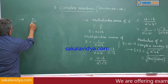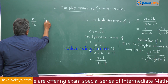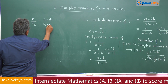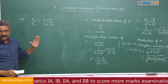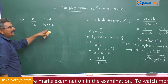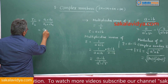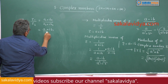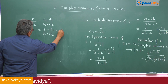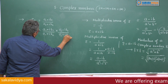Now, z1 by z2 — how to find out z1 by z2? z1 is say a1 plus ib1 and z2 is a2 plus ib2, just as we discussed. Now, multiply with the conjugate complex number of a2 plus ib2. So this is a1 plus ib1 by a2 plus ib2, multiplied with a2 minus ib2 by a2 minus ib2.